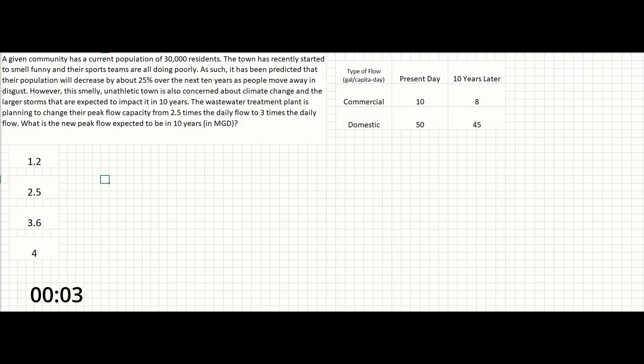In this problem, a given community has a current population of 30,000 residents. The town has recently started to smell funny and their sports teams are all doing poorly. As such, it has been predicted that their population will decrease by about 25% over the next 10 years as people move away in disgust.